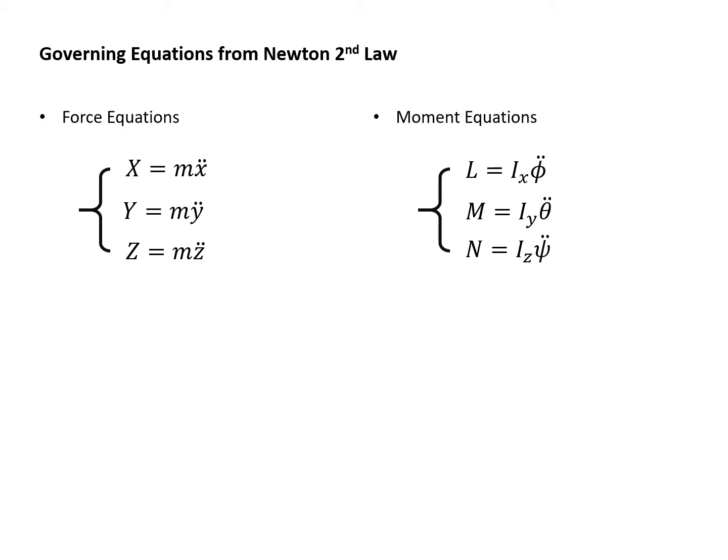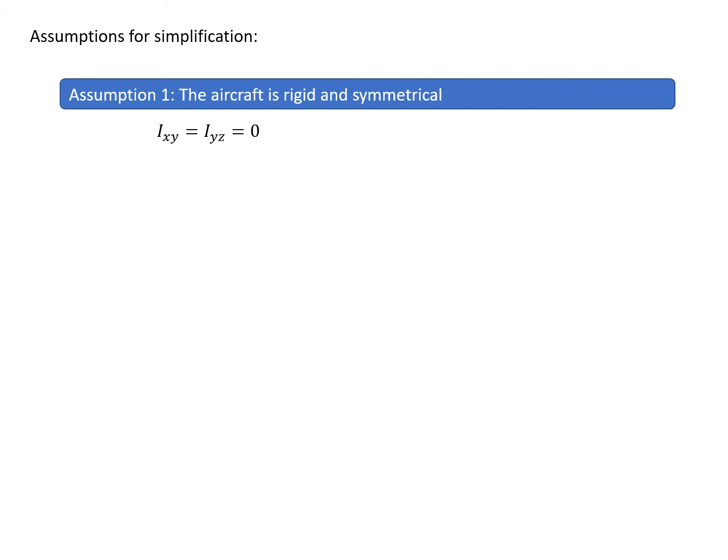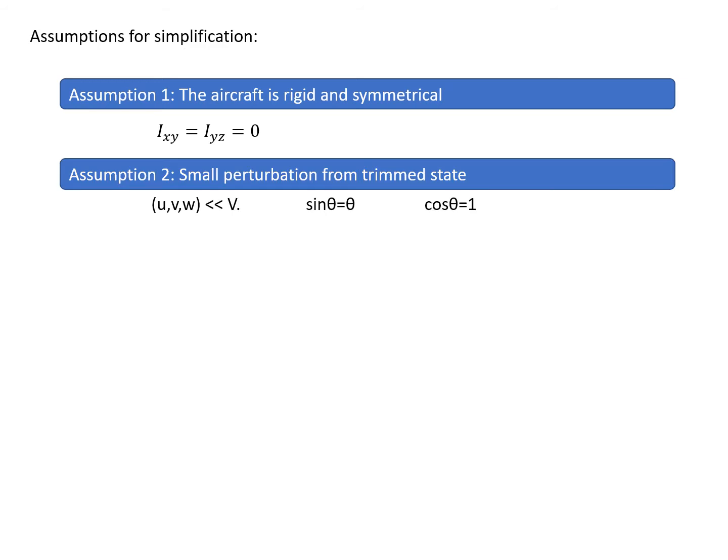In total we have six equations of motion, and now we will address how these apply to the aircraft. Before expanding the governing equations, we need to introduce assumptions for simplification. The first assumption is that the aircraft is rigid and symmetrical — in this case the cross moments of inertia will be zero, so for example Ixy = 0 and Iyz = 0. The second assumption is that the perturbation is small from the trim state.